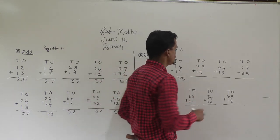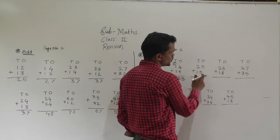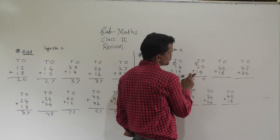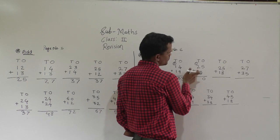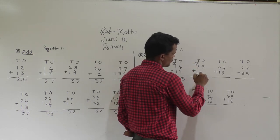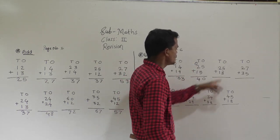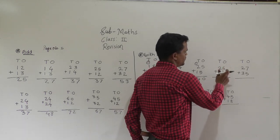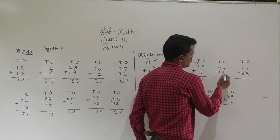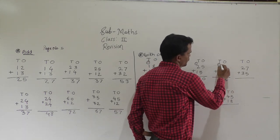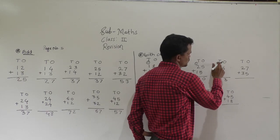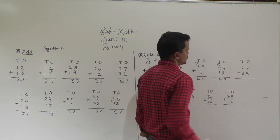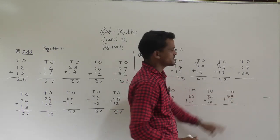Then 25 plus 15: 5 plus 5 is 10 — write 0 here and carry 1. 2 plus 1 is 3, plus 1 carry is 4. Then 25 plus 18: 5 plus 8 is 13 — carry 1. 2 plus 1 is 3, plus 1 carry is 4. So 43 is the answer.